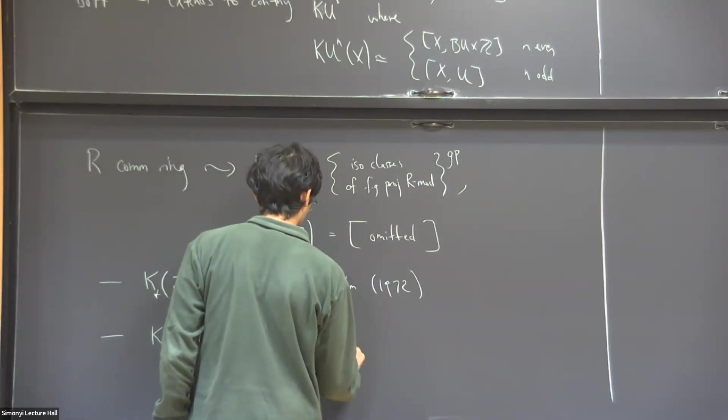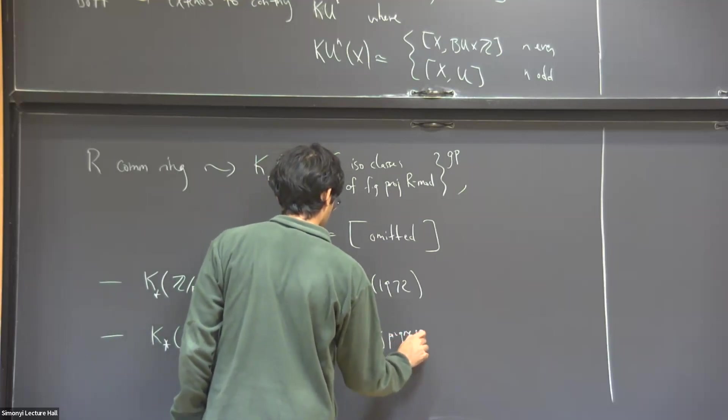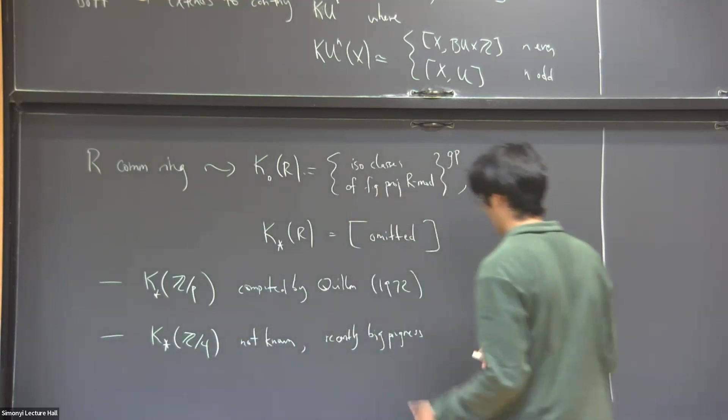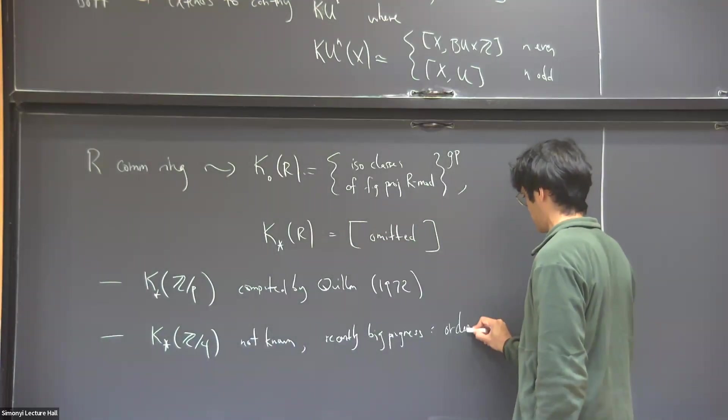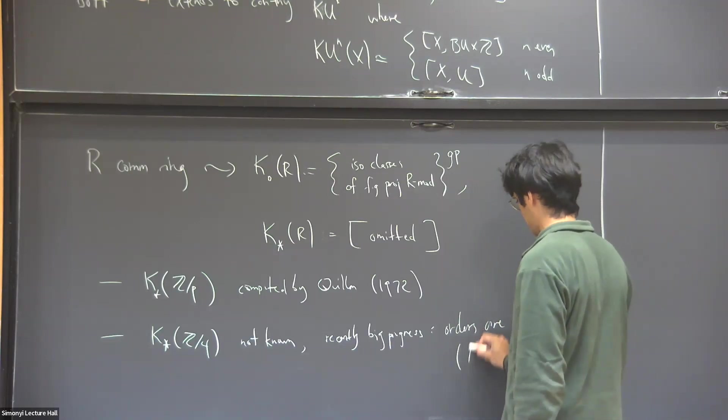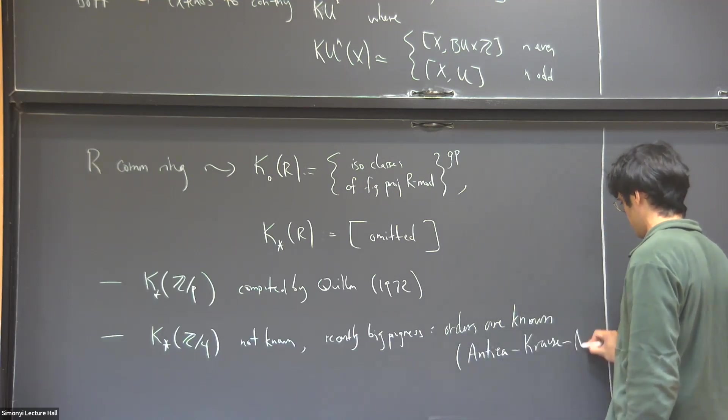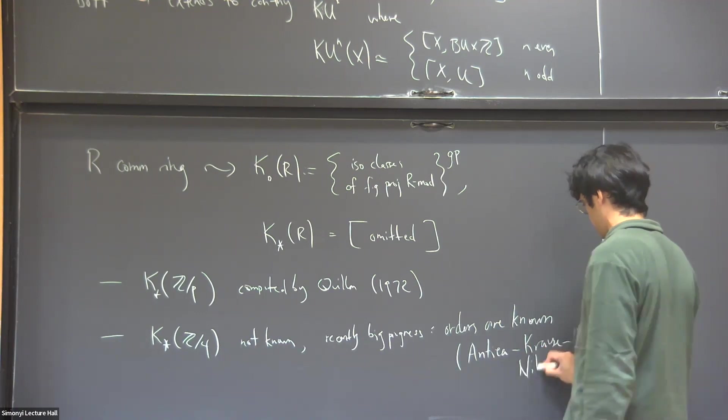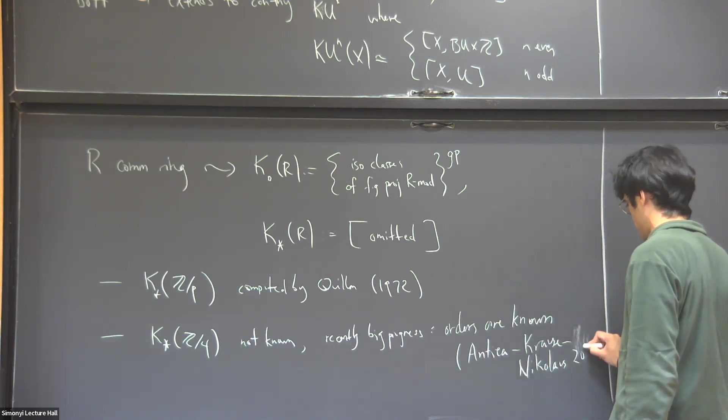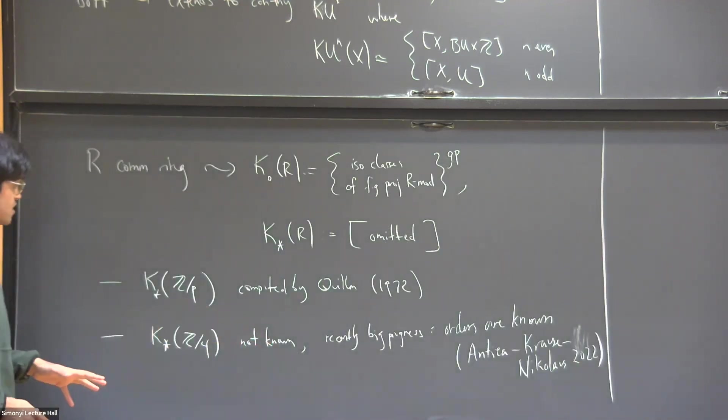So recently, progress. So in this case, just to illustrate some of the orders of the groups are all known. So orders are known. And this is work by, across, Nicholas last year. And I want to give some just a very vague sense of what are some of the theoretical ideas that go into allowing this progress.